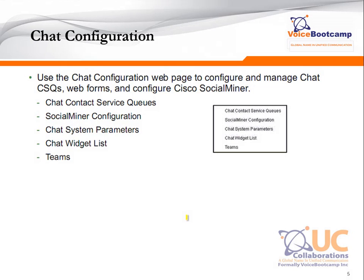The chat configuration allows you to configure chat-related settings so that an agent can communicate with the customer using a web chat. For that, you need a Social Miner and various other applications, such as presence. In a chat configuration, you can modify the chat contact service queue, Social Miner configuration, chat system parameters, widget, as well as teams.